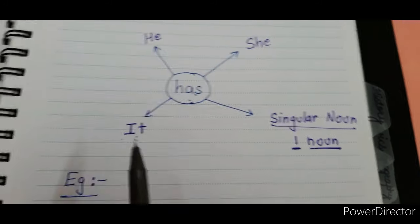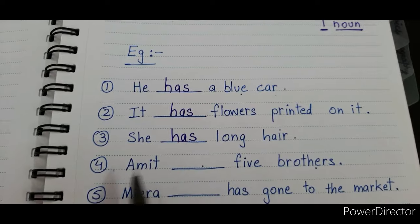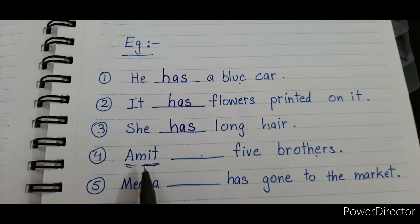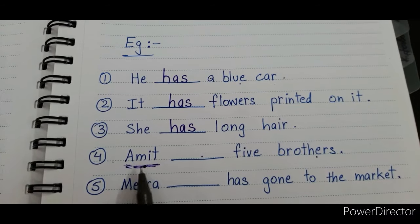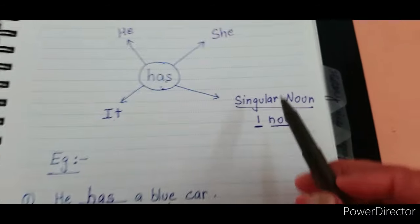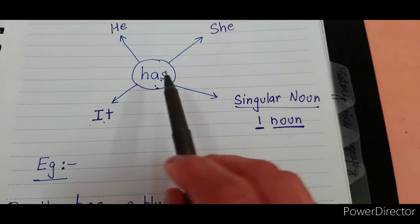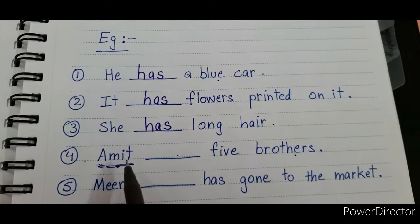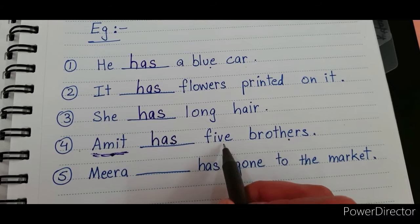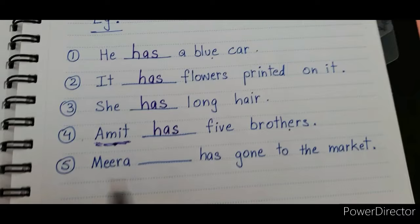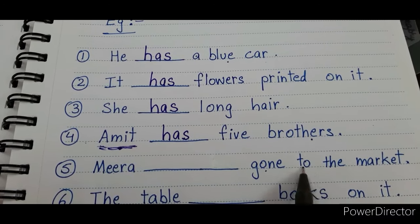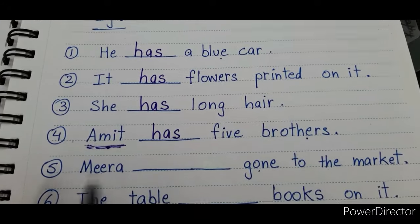After filling in the blanks, you must repeat the full sentence again. Next: 'Amit ___ five brothers.' Is the word 'Amit' in our pronoun list? No. But Amit is the name of a person — a noun — and there is only one Amit. So with one singular noun, we use 'has': 'Amit has five brothers.'